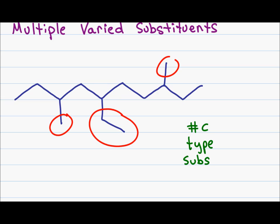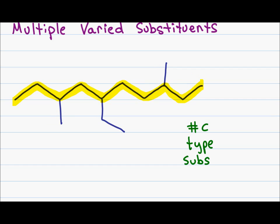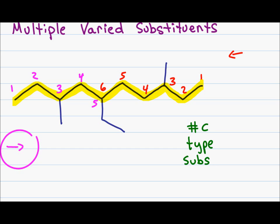Let's practice this example. We start by highlighting the parent chain, then number it. Counting from the right gives me a three for my lowest substituent; counting from the left also gives me a three. When this situation arises I continue counting to find the second lowest number. Counting from the right I get six; counting from the left I get five. Five is lower than six, so the molecule is counted from the left.